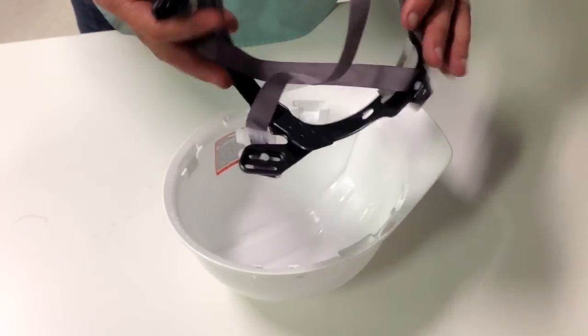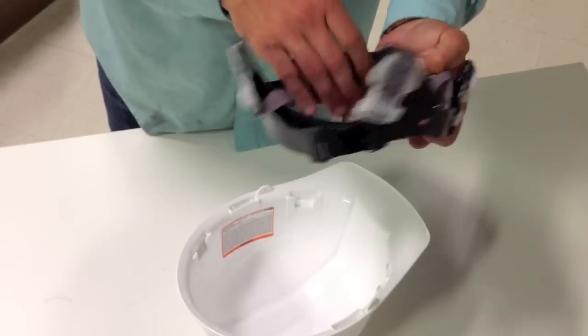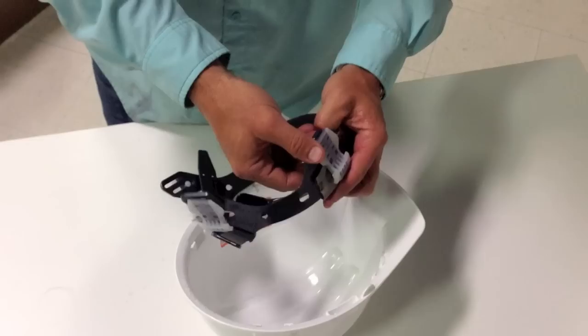First thing you want to do, pull it out, orient it, make sure that your brow pad is facing forward in the helmet.